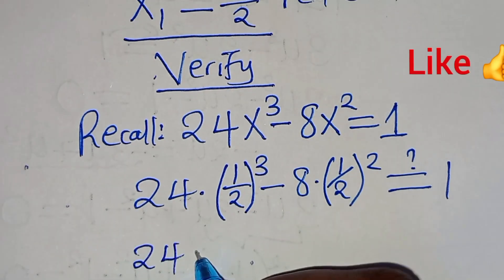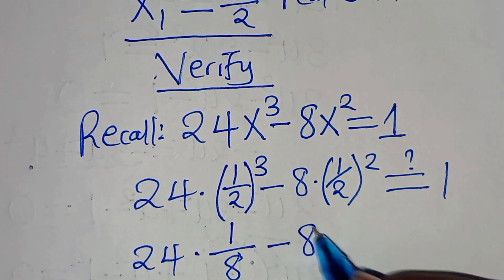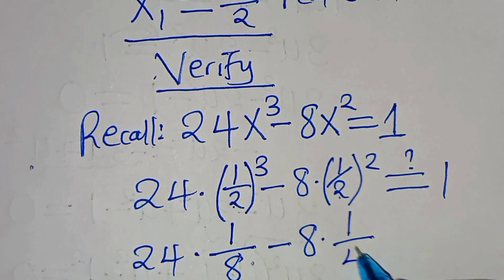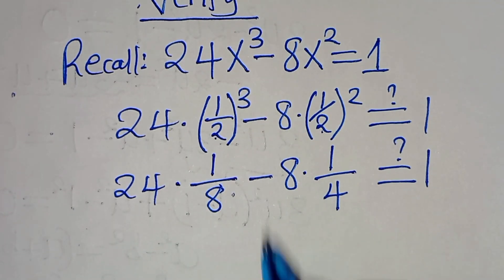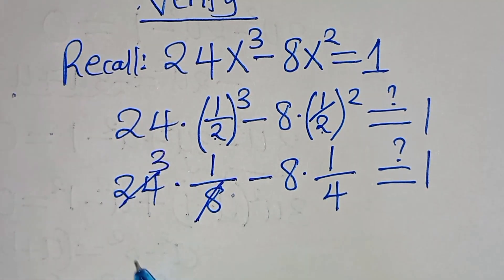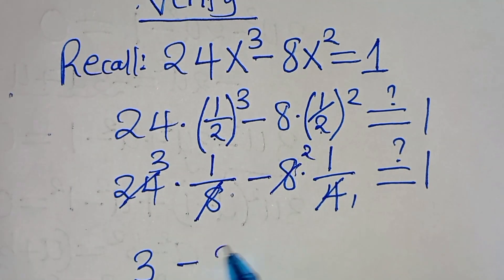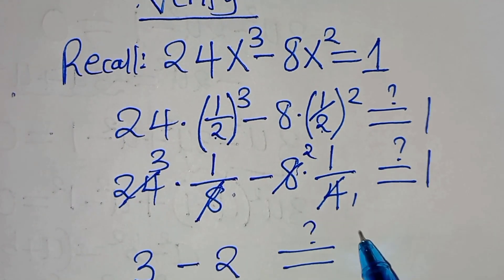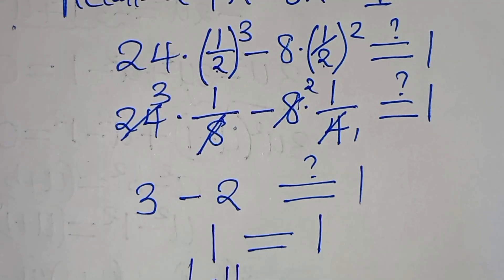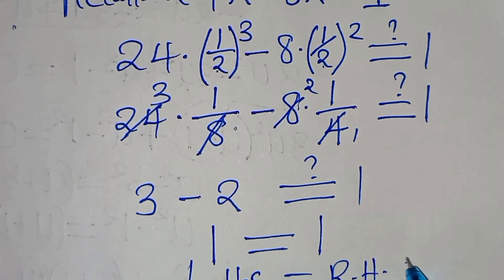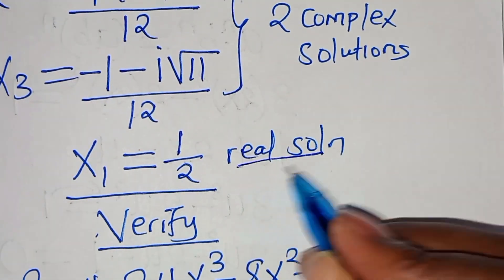The next step: 24 divided by 8 is equal to 3, and 8 divided by 4 is equal to 2, so we have 3 minus 2. This is supposed to give us a value of 1 — 3 minus 2 is equal to 1, and this is equal to 1. So, this implies that the left-hand side is equal to the right-hand side, and this proves that the value of x, which is 1/2, satisfies the equation.